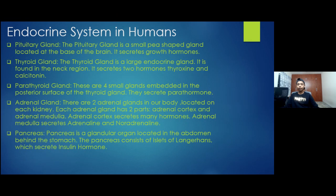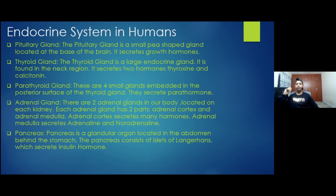Now let's see the functions of these systems. The pituitary gland is a pea-shaped gland located at the base of the brain. It secretes growth hormone. Its undersecretion causes dwarfism, a condition where a person is very short, and its oversecretion leads to a condition known as gigantism, where a person grows very tall.